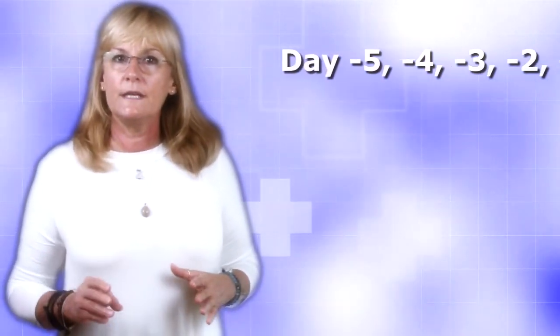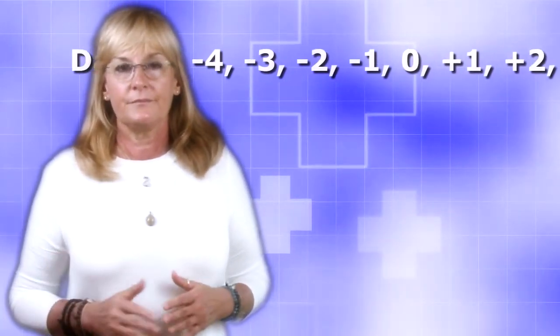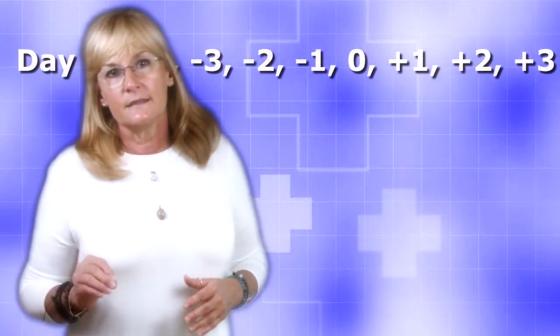The induction schedule goes like this. It's a countdown: day minus 5, minus 4, minus 3, minus 2, minus 1, zero, plus 1, plus 2, plus 3, and so on. On the negative days, minus 5, minus 4, minus 3, minus 2, you will receive chemotherapy to start the bone marrow cell destruction process. Day minus 1 is a day of rest, and I guarantee you, you will be in bed all day, and you will be in bed all day on day 0. You get your whole body radiation and your new bone marrow cells, your transplant.